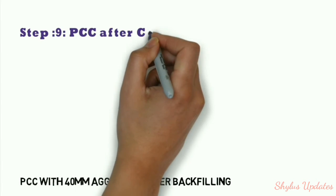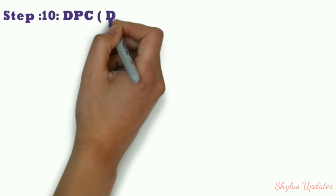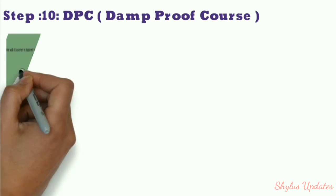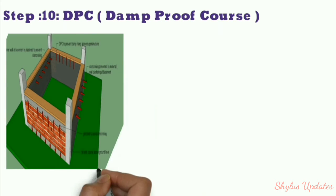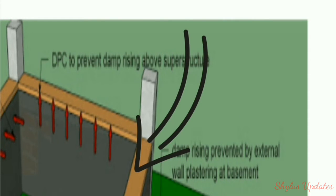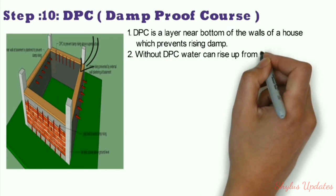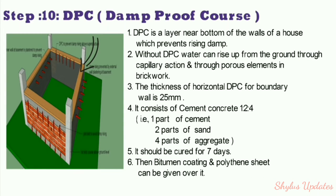Step 9: PCC after compaction — PCC with 40 mm aggregate over backfilling. Step 10: Damp Proof Course (DPC). DPC is a layer near the bottom of the walls that prevents rising damp. Without DPC, water can rise from the ground through capillary action through porous brickwork. The thickness of horizontal DPC for a boundary wall is 25 mm. It consists of cement concrete in ratio 1:2:4 and should be cured for 7 days. Bitumen coating and polythene sheet can be applied over it.